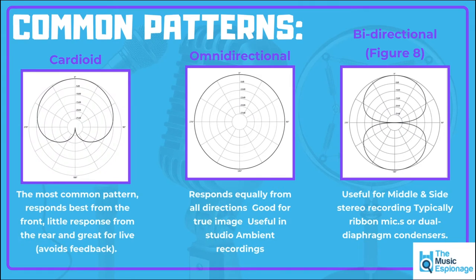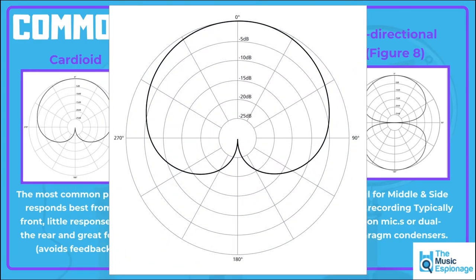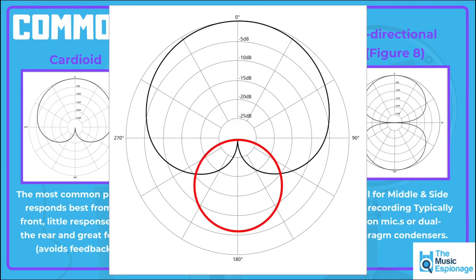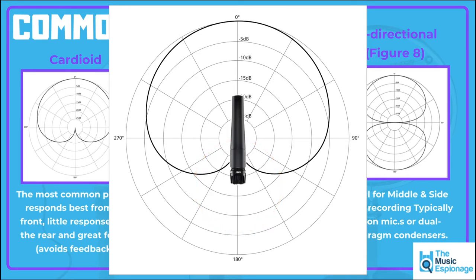We can see three really common polar patterns here: the cardioid, the omnidirectional, and the bidirectional, also known as the figure of eight. Taking the cardioid as an example, at the top of the circular graph we can see zero degrees — that is the microphone pointing at the sound source, whether vocals, guitar, or a kick drum. If you move that microphone facing away from the sound source, towards 180 degrees, there's a really big drop in the microphone's response. It won't pick up sound coming from behind it.